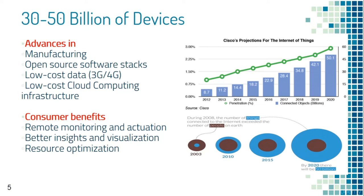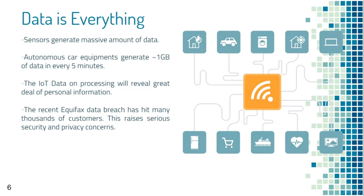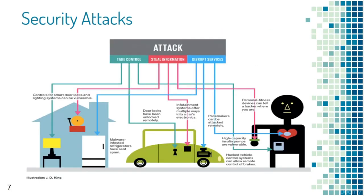IoT data is the most important part of these scenarios. Equipment in an autonomous car generates about one gigabyte of data every five minutes, and this huge volume of data can reveal a great deal of personal information. The recent Equifax hack has affected many thousands of customers, raising serious security and privacy concerns. Attacks on IoT systems are broadly classified into three categories: taking control of smart appliances, stealing information such as door lock authorization codes or location from fitness devices.